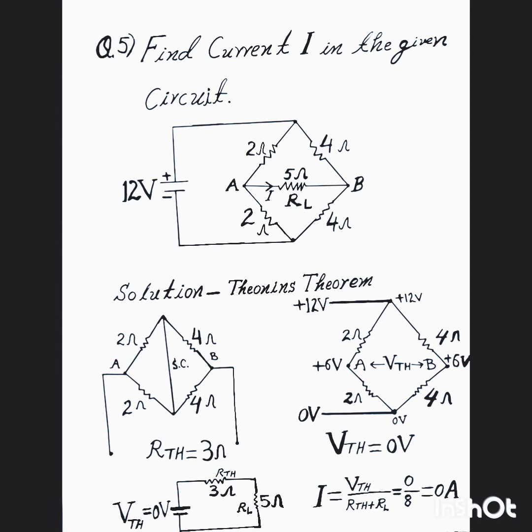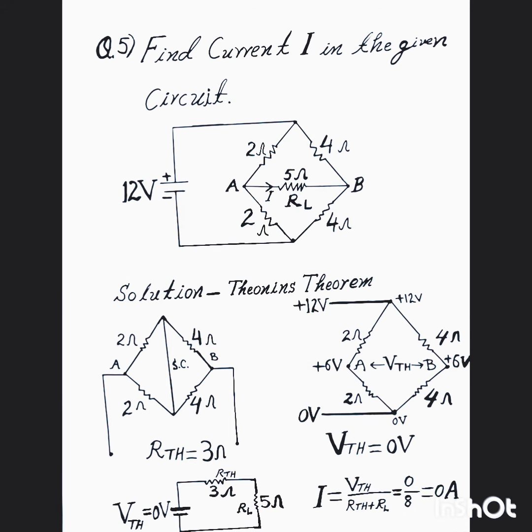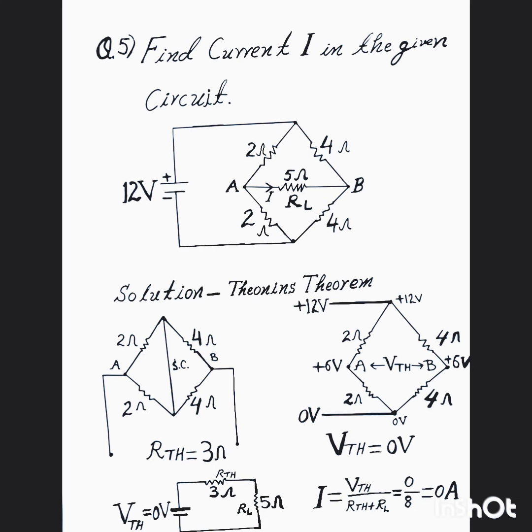So RTH equal to 1 plus 2, 3 ohm resistance. And next we will find VTH voltage, or VAB voltage between A and B.